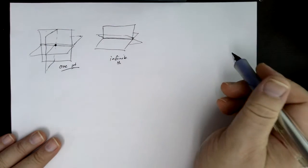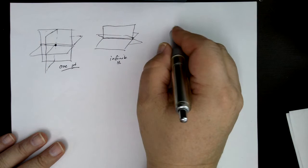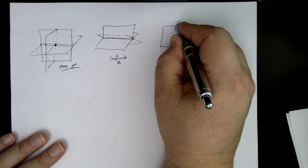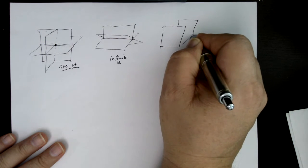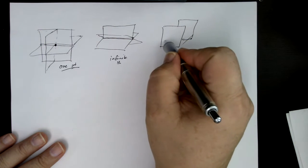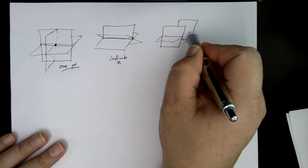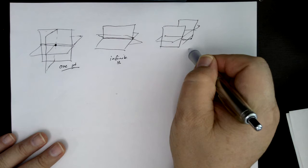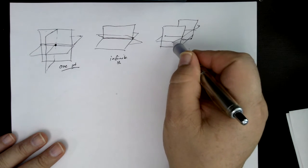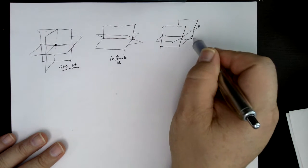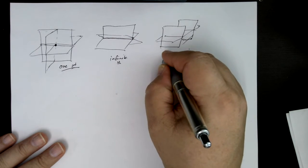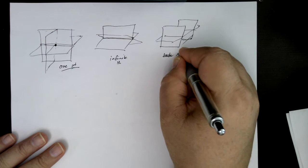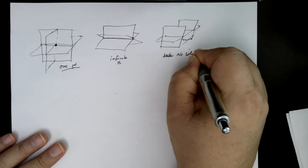And then what would a case look like if there were no points in common? Well, you could have something like this, where you have one plane, then you could have another plane that's parallel to that, and then maybe another plane that intersects the two of them. So in this case, there's no point in common between all three planes. So the intersection is empty, or so we have no solution to the system.